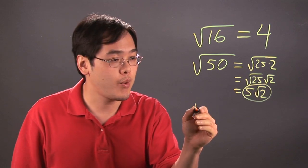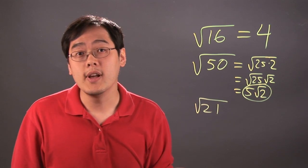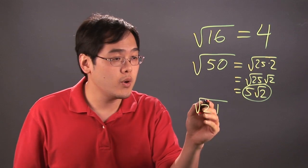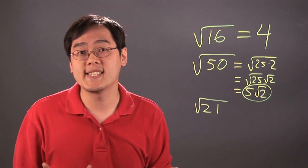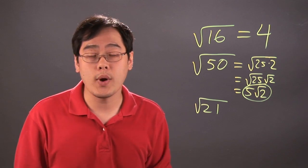If you have a square root such as square root of 21, 21 is not a perfect square. Unfortunately, the two numbers that multiply to give you 21 are 3 and 7. Neither 3 nor 7 are perfect squares.